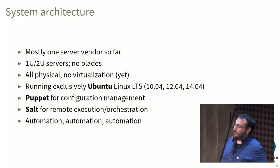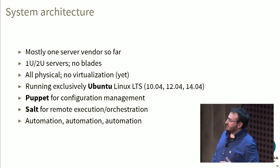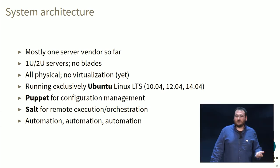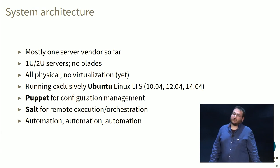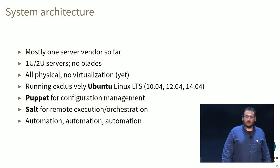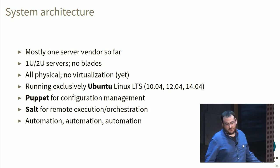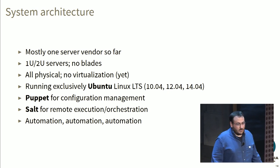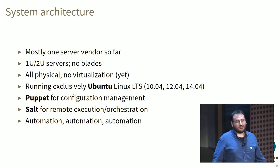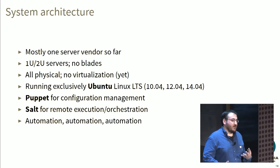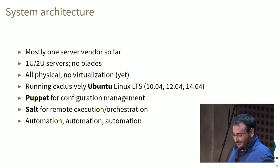Our system architecture is mostly one server vendor, one or two used servers, no blades. It's all physical for now — we're exploring virtualization via containers or VMs. We run Ubuntu Linux LTS releases everywhere, the past three LTS releases. We use Puppet for configuration management, which we've used for a few years before other alternatives started popping up. It's about 60,000 lines of code right now and another 13 templates, making it very difficult to migrate to something else even if we wanted to. We use Salt for remote execution, orchestration, and our deployment system, and we generally try to automate everything.